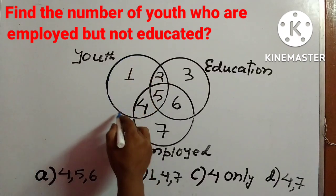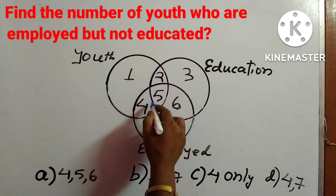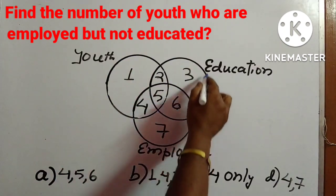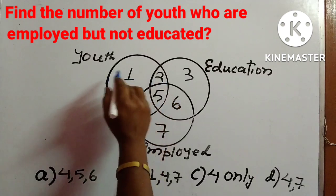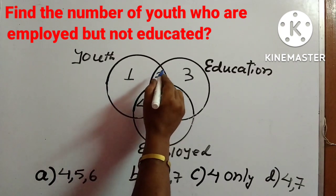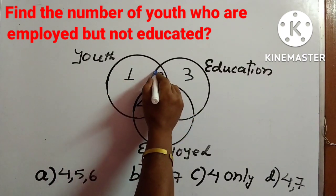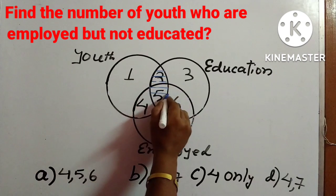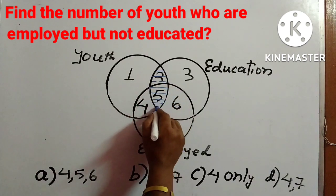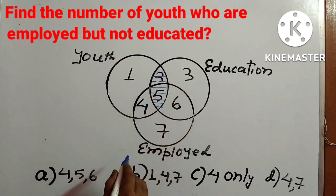This is the circle for youth and this is the circle for education. The common intersection part of these two — this portion here — is the intersection part or the common part.